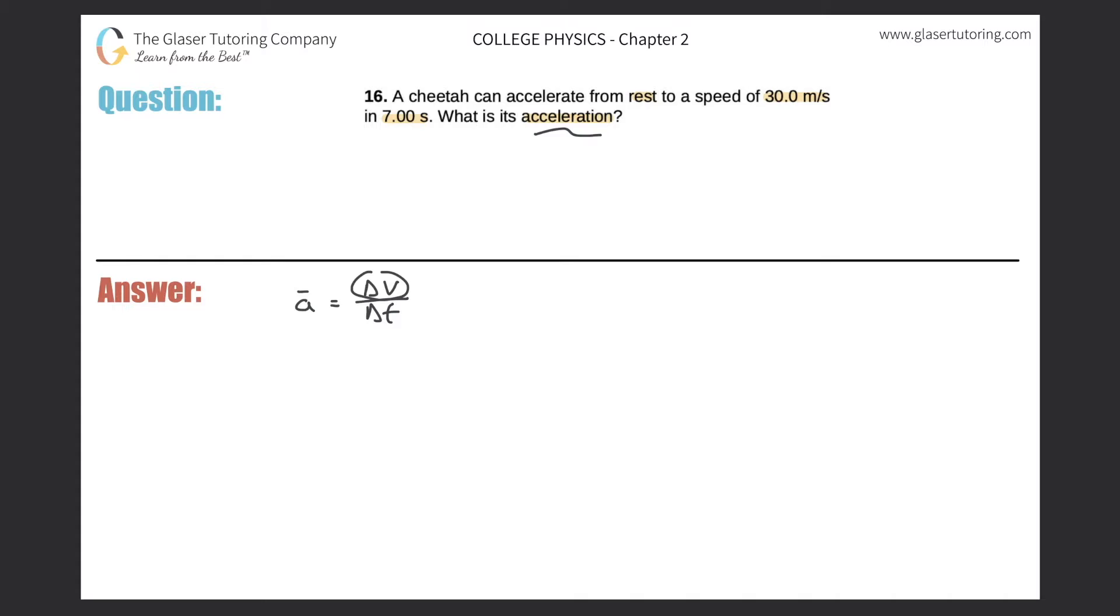Expanding the numerator, the change in velocity - any change value will always be the final value minus the initial value.